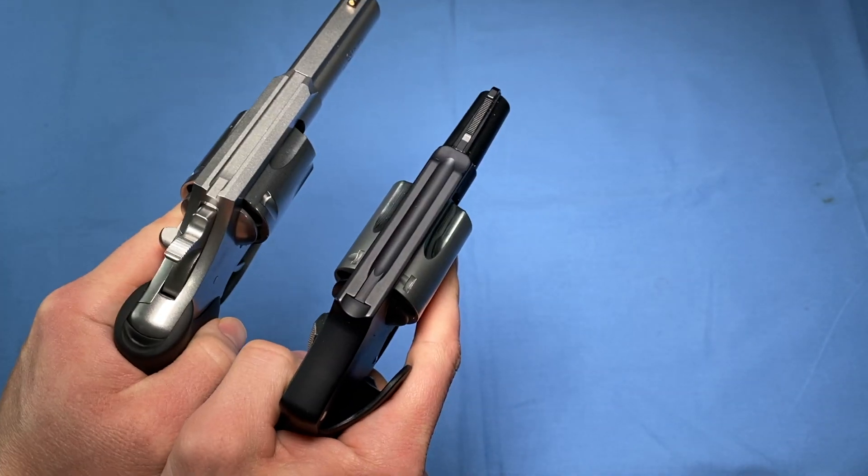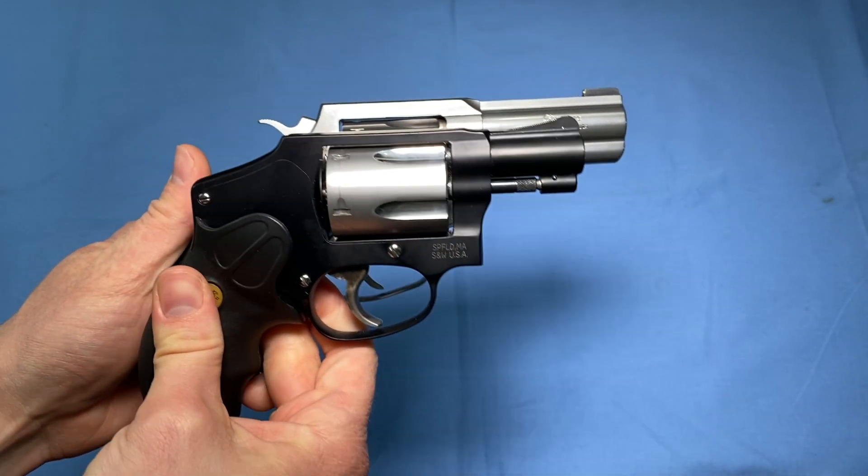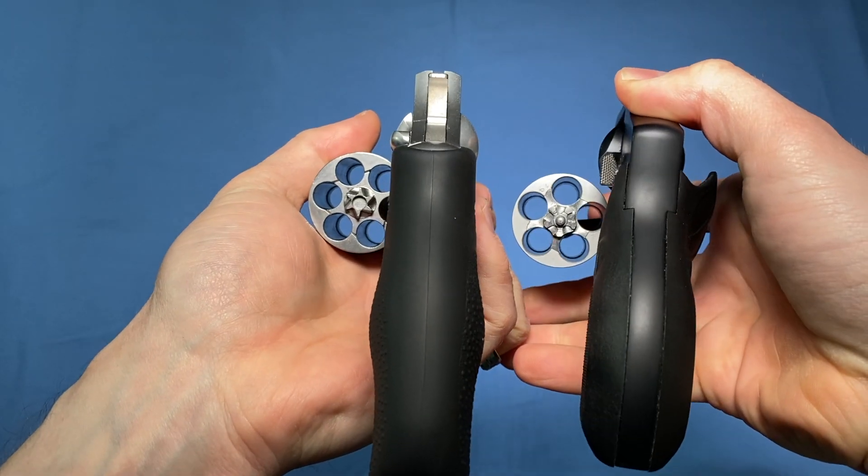So when I first bought this gun towards the end of 2019, first of all I loved that it was a little larger than the size of a J-frame and held six rounds and it was chambered in .357 Magnum. These are all pluses.